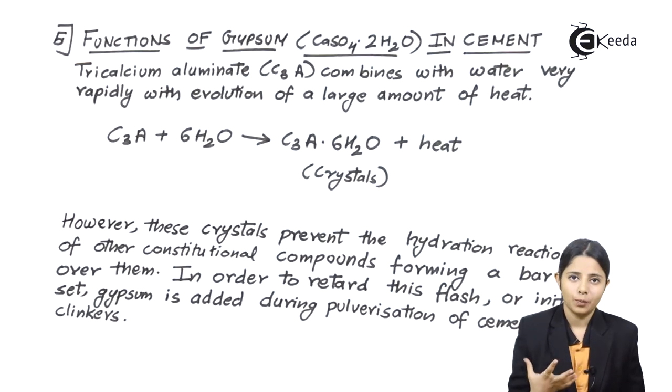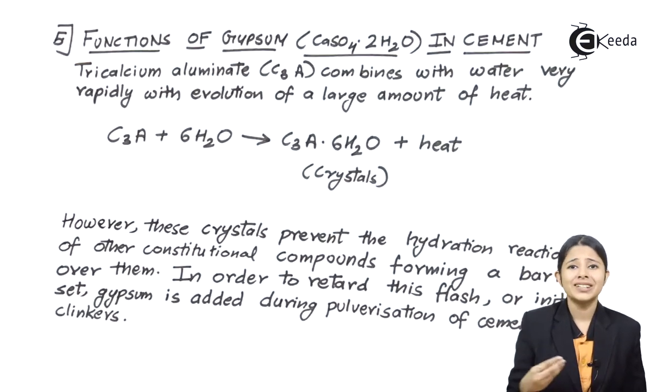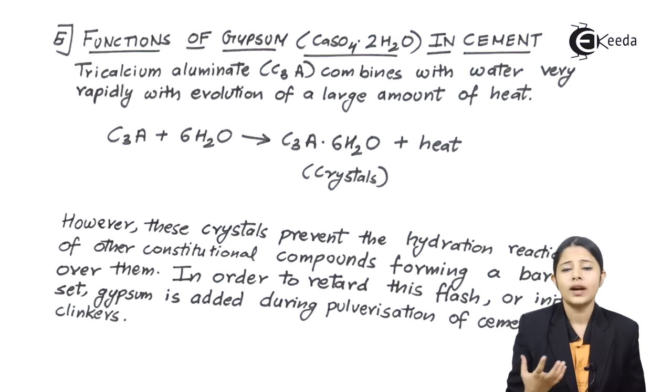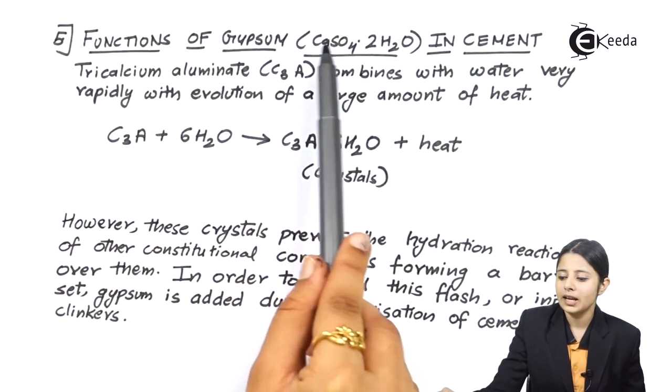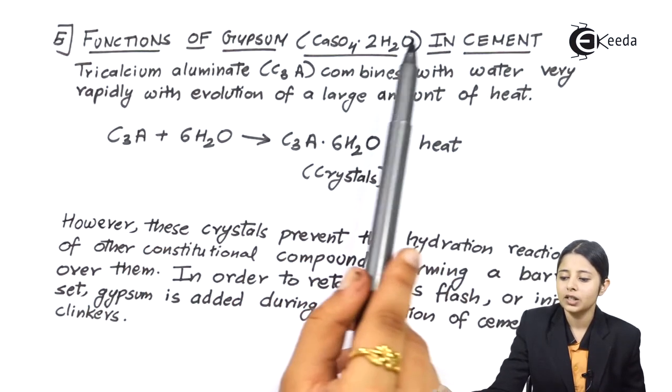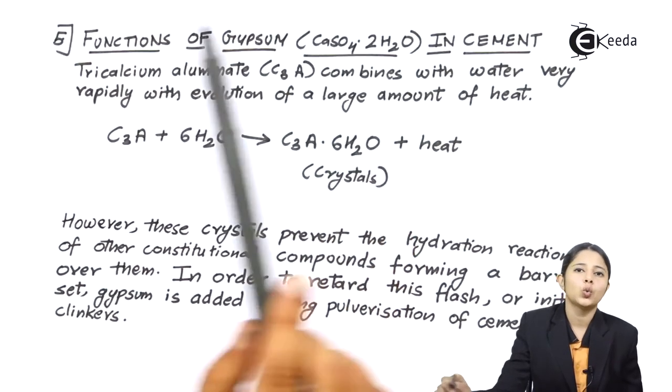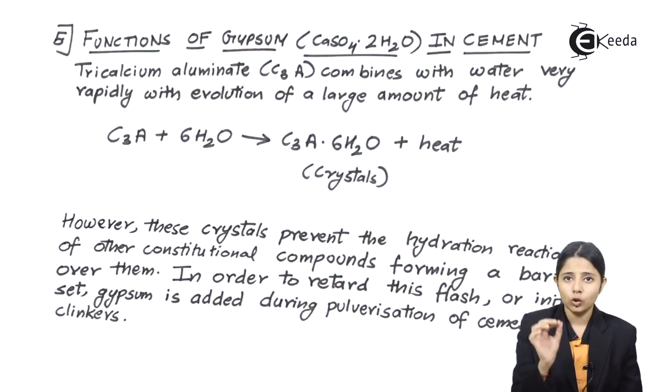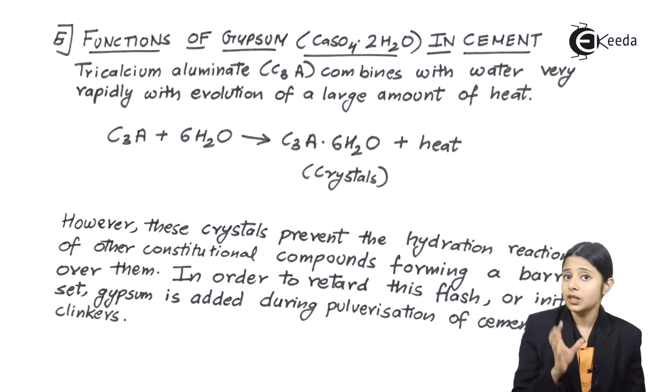The fifth most important component of the cement. And I will also call it as an active component of the cement. Why will I call it active component? Because it actively participates in getting into reactions with water and forming the paste of water. Well this component is gypsum. Functions of gypsum, CaSO4.2H2O in cement. It also itself has dot 2H2O. When I talk about 2H2O in the form of dot, it is known as water of crystallization.